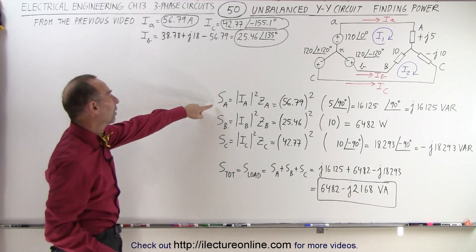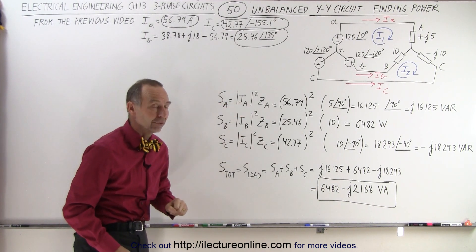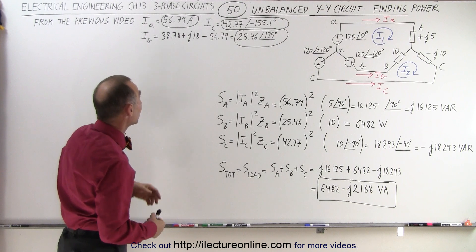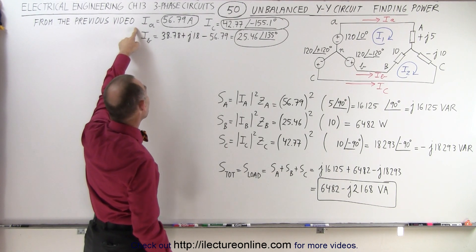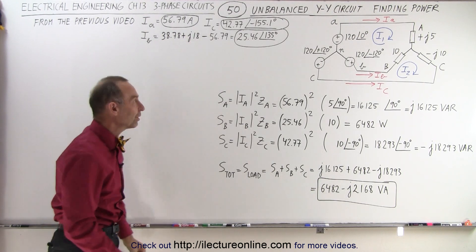The equation is that the power consumed equals the current squared times the impedance. Now, to do this problem, we have to calculate the currents, so here we have I_A, I_B, and I_C, which were calculated in the previous videos.